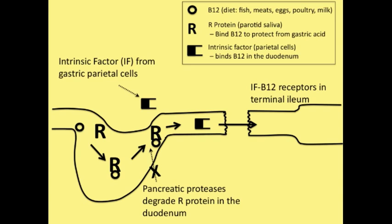In celiac disease, you get atrophy and destruction of the GI tract wall and hence decreased absorption. In chronic pancreatitis, that's not the case. You don't have the enzymes to degrade R protein and therefore you can't free up B12. It can't unite with intrinsic factor and therefore you get decreased absorption. Same end result, but two completely different mechanisms.